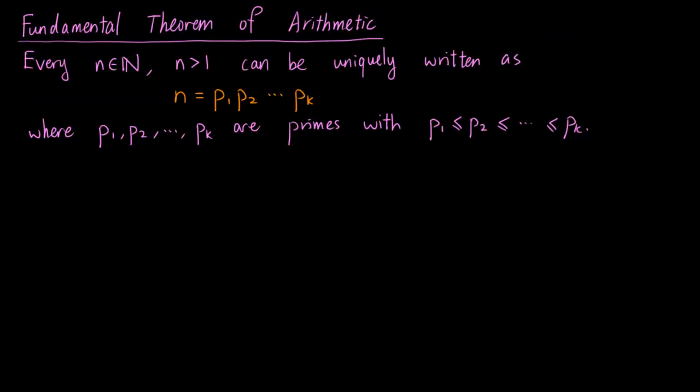Now we can talk about the fundamental theorem of arithmetic, which states that every positive integer n greater than 1 can be written uniquely as n equals p1 times p2 up to pk, where p1 up to pk are primes arranged in ascending order. In other words, every positive integer n greater than 1 can be factorized uniquely as a product of prime numbers. Note that the existence of such a factorization is proved in a previous video.